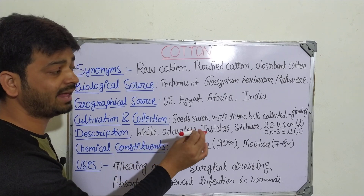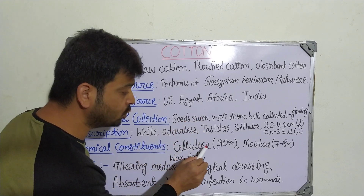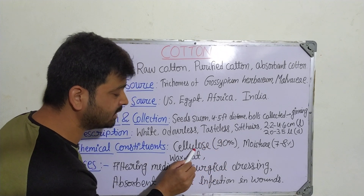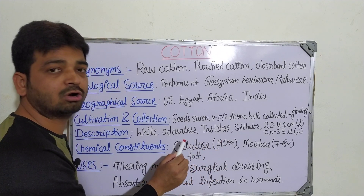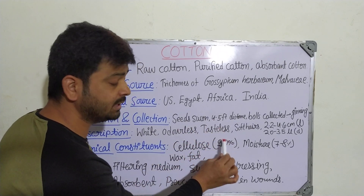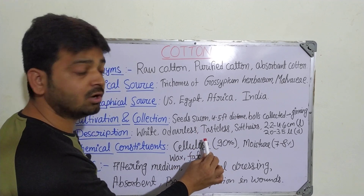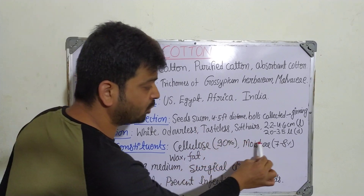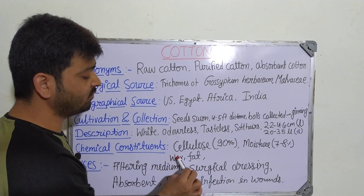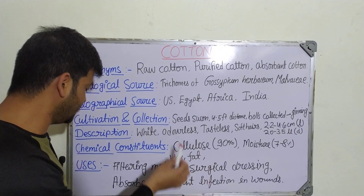Coming to the chemical constituents: cellulose is present at 90% — this is the main chemical constituent present in cotton and should not be forgotten. Then moisture is 7 to 8 percent, and other waxes and fats are also present.